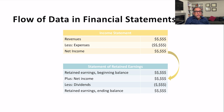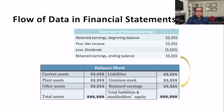What is important here is the flow of data from one statement to the next. Net income is transferred to the statement of retained earnings, and from the statement of retained earnings the closing balance is transferred to shareholders' equity — retained earnings.